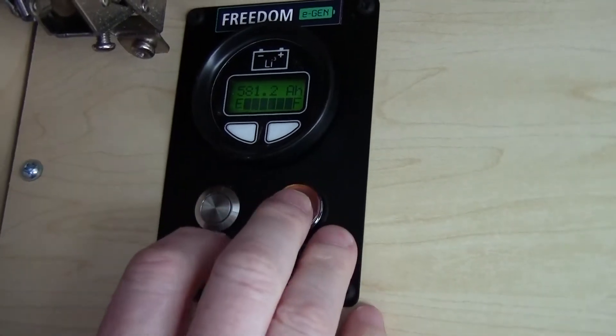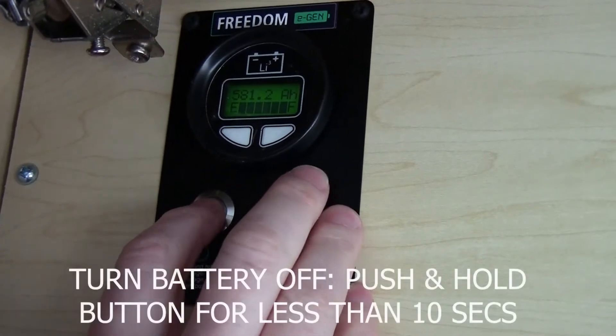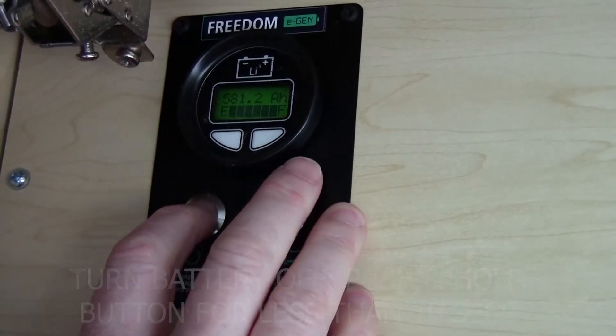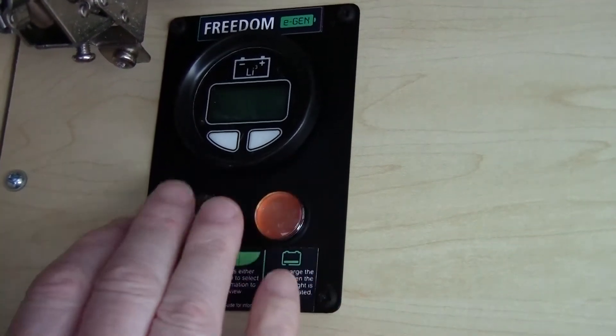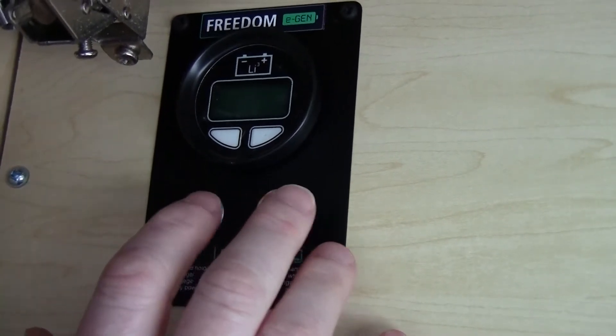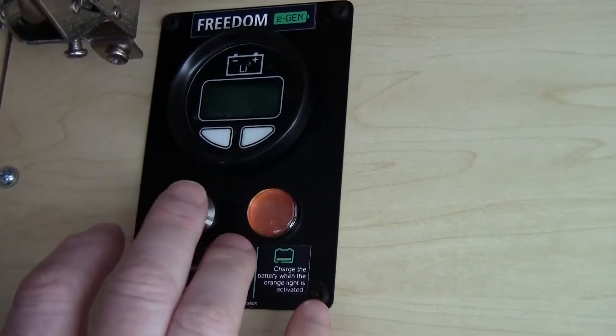You can also turn the battery off by pushing and holding the button for a little less than 10 seconds until the display turns off. That disconnects DC output from the battery's BMS and is effectively disconnecting the battery.